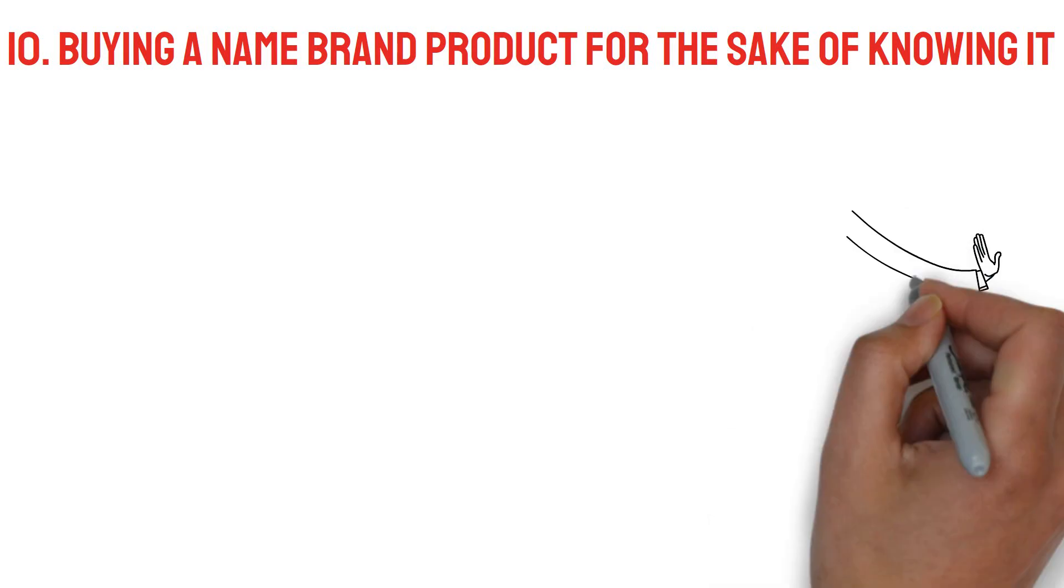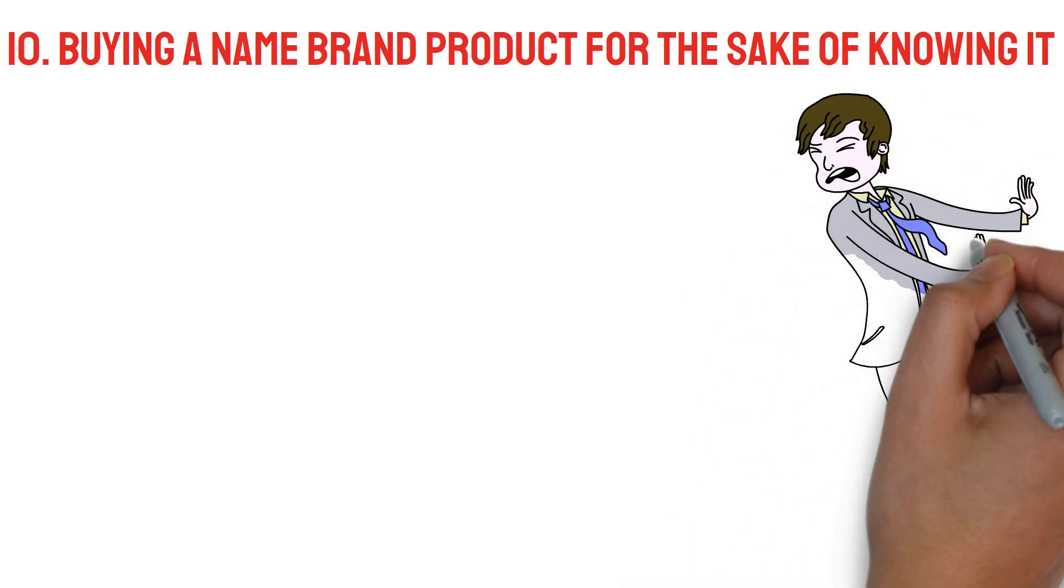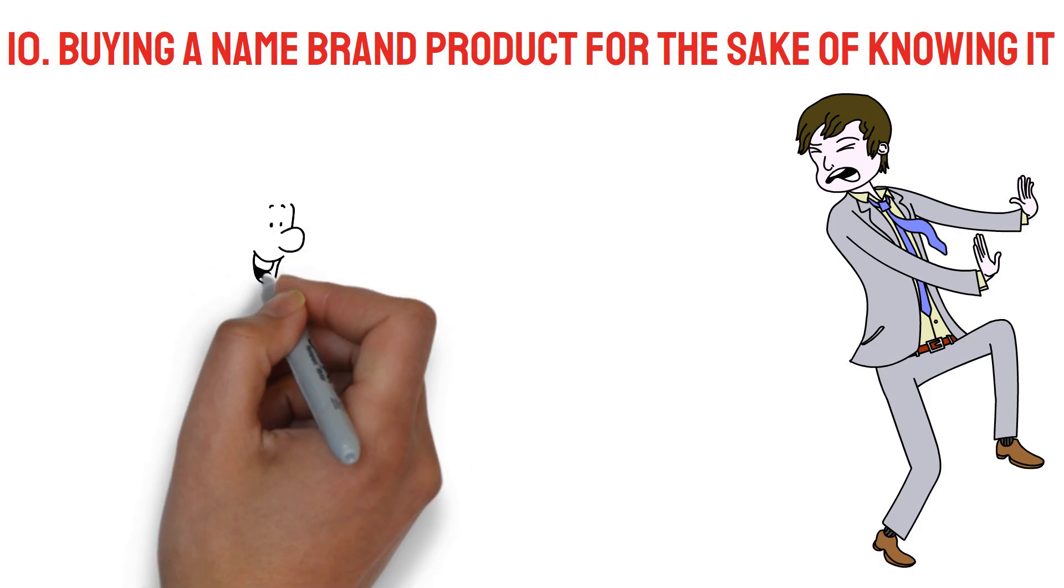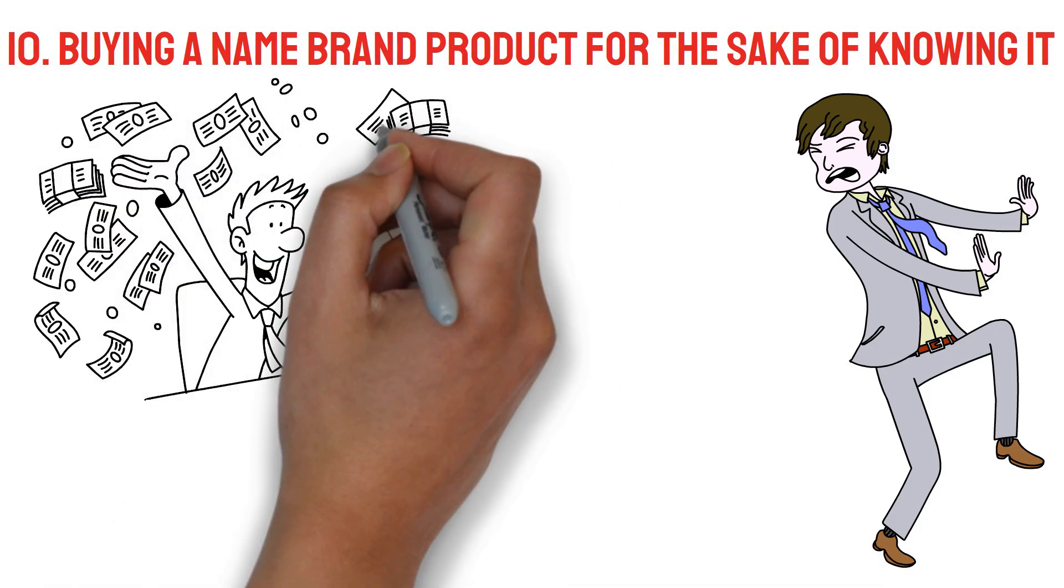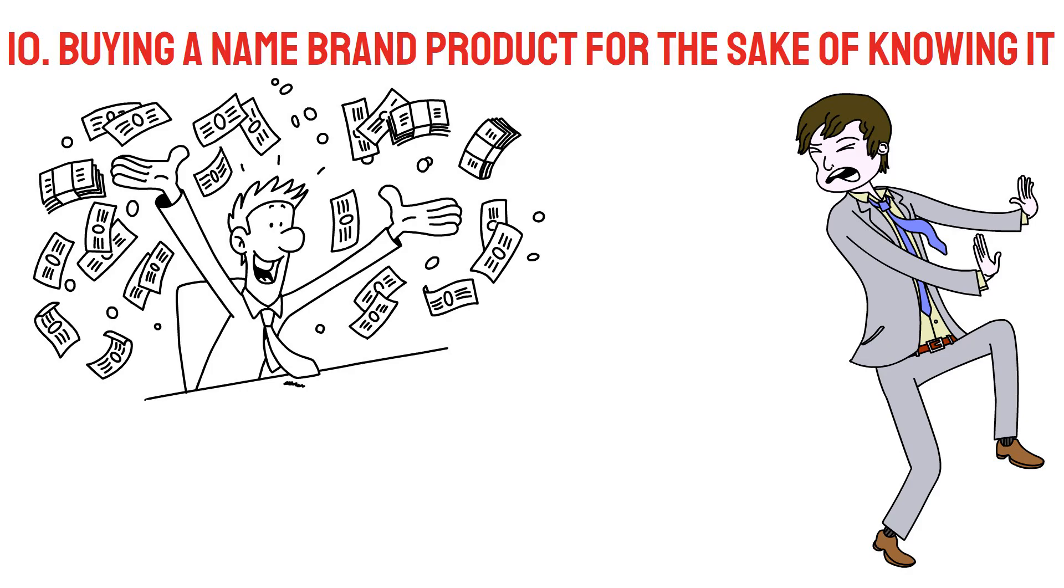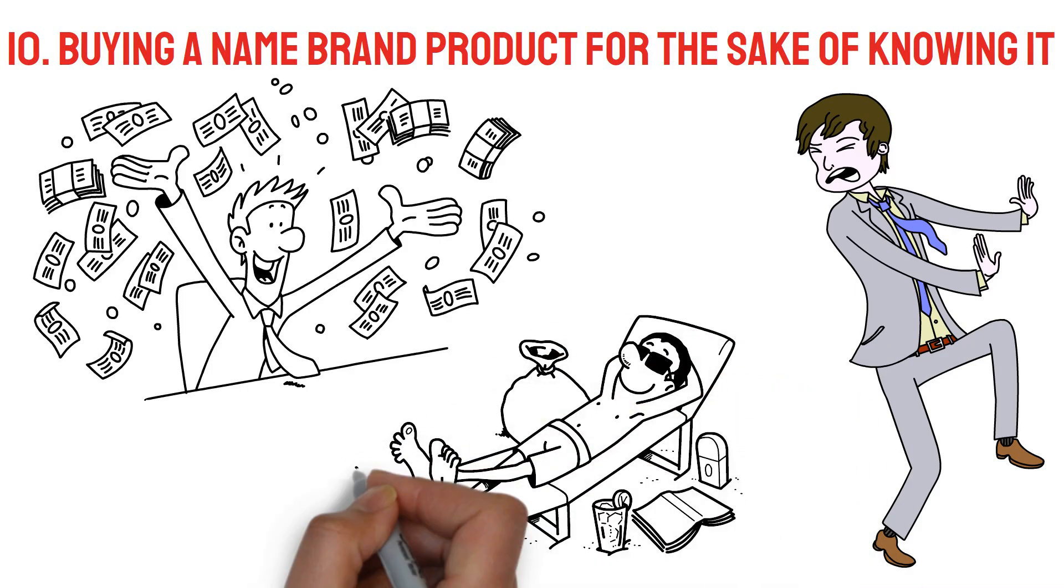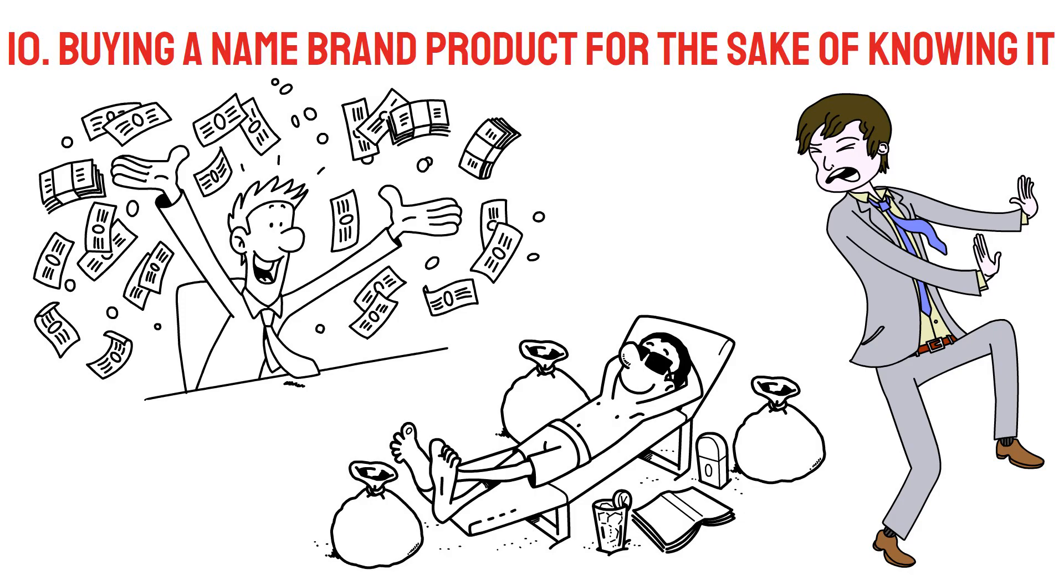Ten: Buying a name brand product for the sake of knowing it. It's possible that the wealthy are less interested in paying more for a well-known brand than they are in getting the best possible deal. People who have a lot of money are often thought to live lavishly and own all the newest and greatest brands, but when it comes to how they spend their money, rich people's unexpected reasons for not splurging on recognizable brands may surprise you.